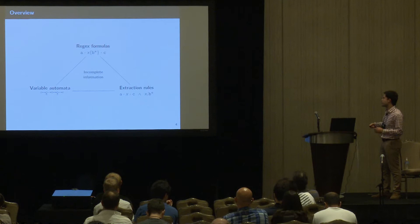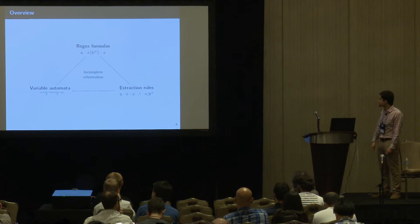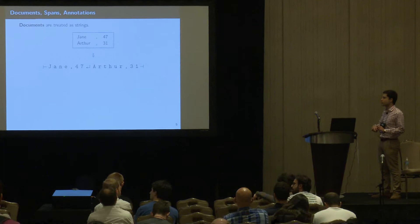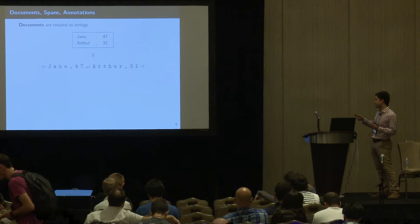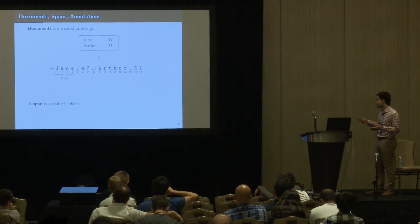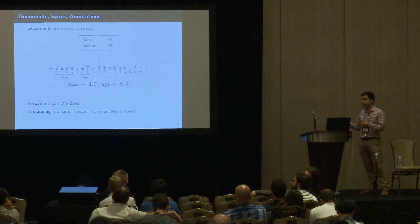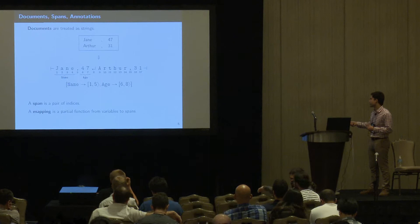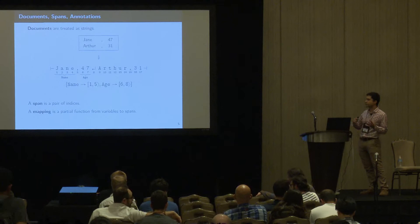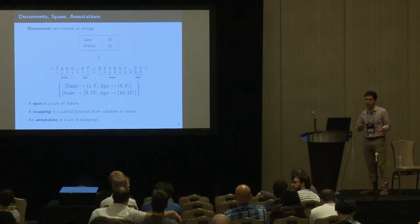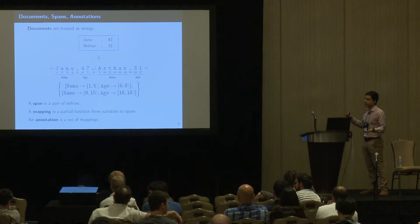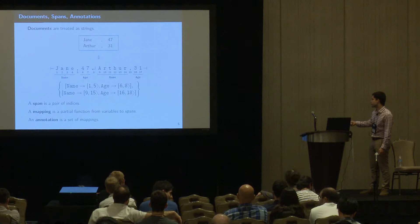The basic setting is that we have a document, say a CSV file, and we treat it as an indexed string. We are interested in spans — pairs of indices in this string. A mapping is a partial function from variables to spans; for example, assigning the name variable to span 1–5 and the age variable to span 6–8. What we want to extract from a document is an annotation, which is simply a set of mappings — a generalization of a relation in a database.